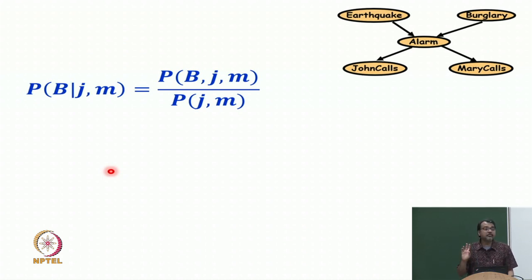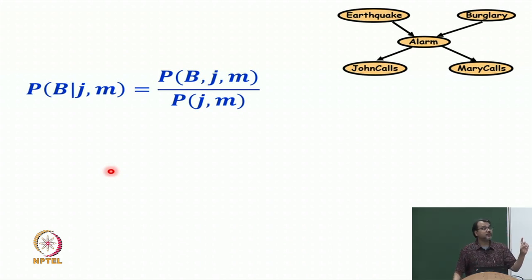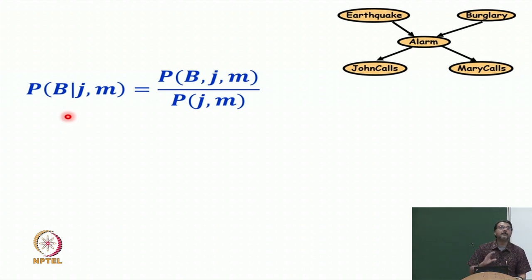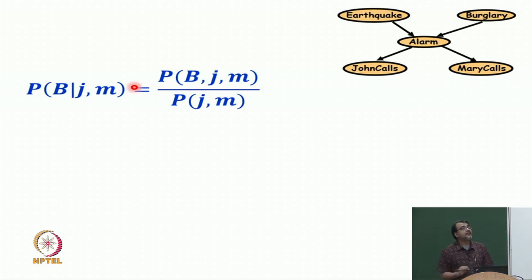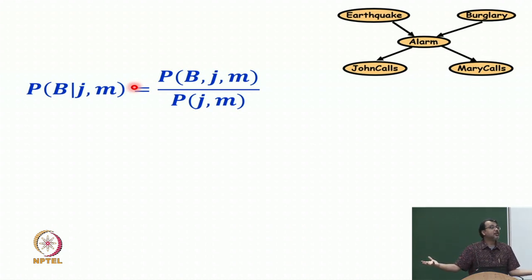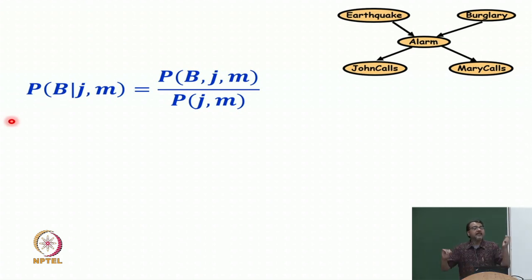The next step is the most important one — this is where the joint distribution comes in. When you ask about a particular variable, you sum up all the numbers where that particular thing is active. In this graph we have 5 variables, so the full joint distribution has 2^5 = 32 numbers. If I am interested in P(B=true, j, m), then 4 numbers will indicate that — one where earthquake is true and alarm is false, one where earthquake is true and alarm is true, and so on. So we can write this as a full joint distribution summing over the hidden variables.